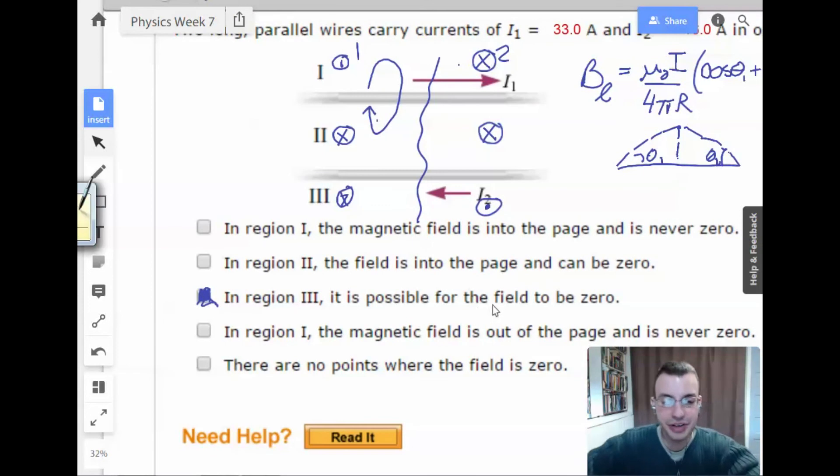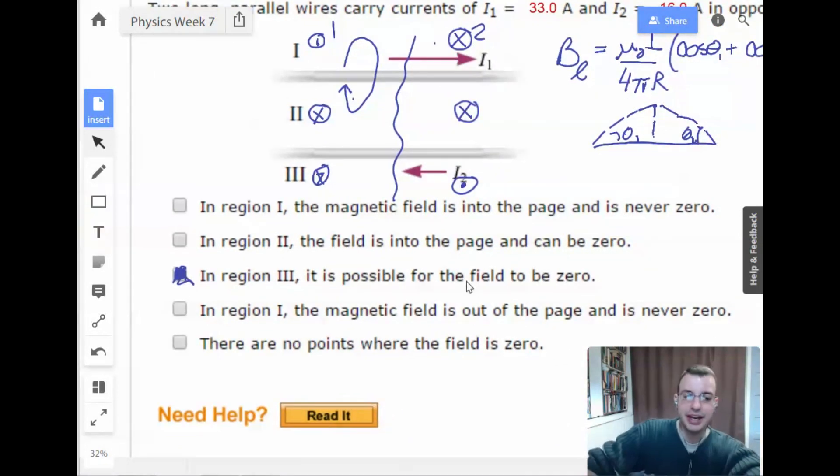In region one, magnetic field is out of the page and is never zero. Region one magnetic field is out of the page and is never zero. True. Because wire one is going to dominate, and wire one produces some magnetic field in region one. Therefore, there will never be zero. Wire two is just too weak and too far away to cancel out the effects from wire one. Therefore, it will never be zero. And the field is out of the page. So yes, fourth choice, are also a winner.